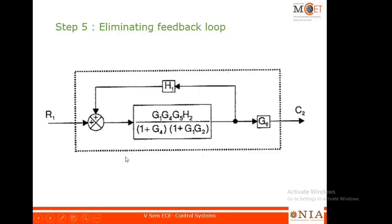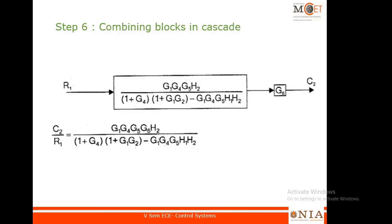Now this is simple — this is a feedback loop and you reduce it, then multiply by G6 to obtain the output. After reducing the feedback block and multiplying by G6, you get the transfer function C2/R1.